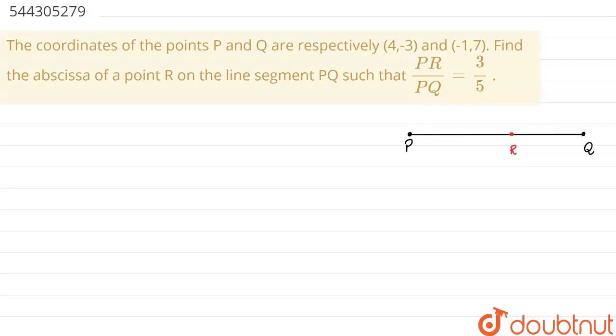If I consider PQ and divide it into 5 equal parts, then PR will be 3 parts. And I can also say R point divides the segment such that QR will be 2 parts of the line segment.